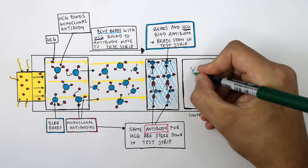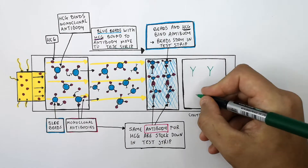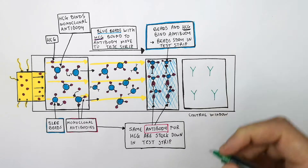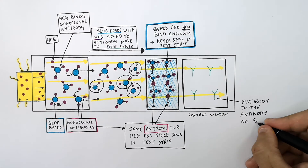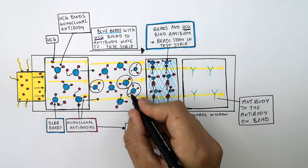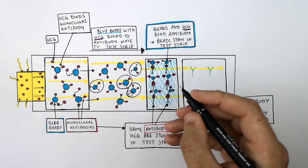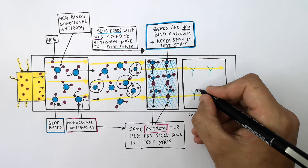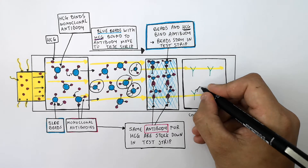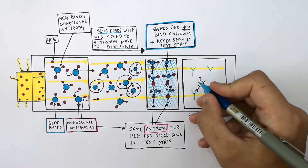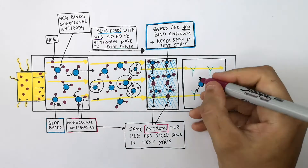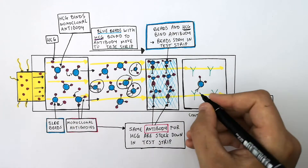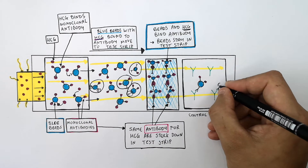In the control window are antibodies to the antibody on the bead — so these are not specific to HCG, but rather specific to the antibody for HCG. When the blue beads move through into the control window, the antibodies on the blue beads bind onto the antibodies that are stuck down in the control window, causing the blue beads to remain stationary there.